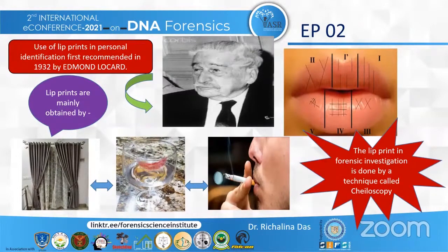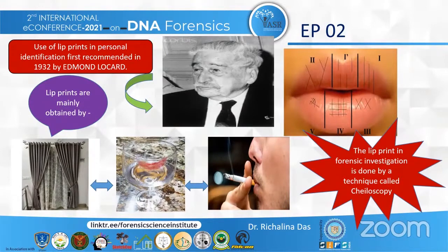The collective name for the forensic investigation in which human lip prints are analyzed is called cheloscopy. The area of interest focused on in cheloscopy is mainly the system of furrows, which contains many bifurcations, crossings, and other marks on the lips. The uniqueness of lip prints makes cheloscopy especially effective whenever appropriate evidence is discovered at a crime scene, be it lipstick blot marks or lip prints left under cups, glasses, or even envelopes.